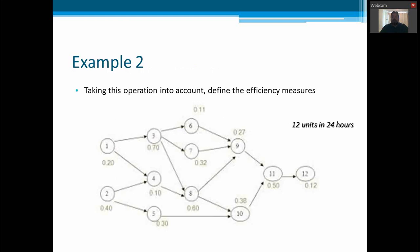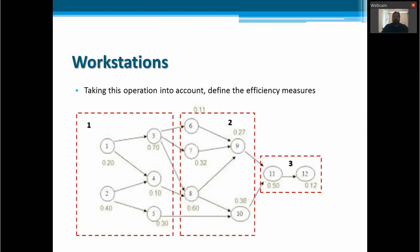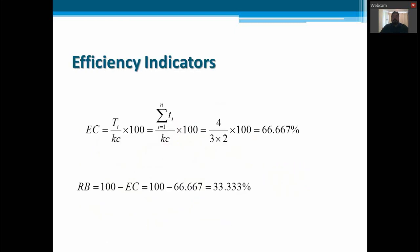We have another example. We need 12 units in 12 and 24 hours. We calculate the cycle time and the ideal number of workstations. And in this case, we have 66.66% of efficiency with a delay of balance of 33%.